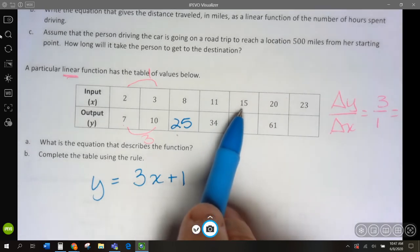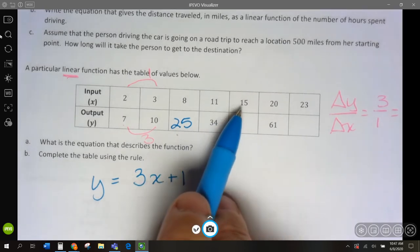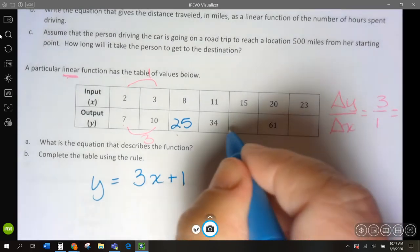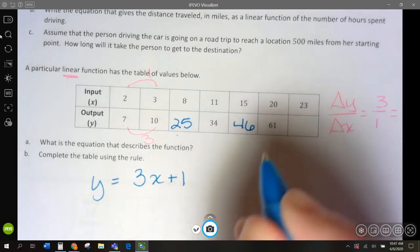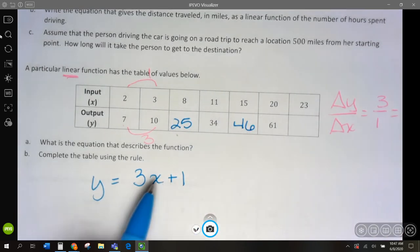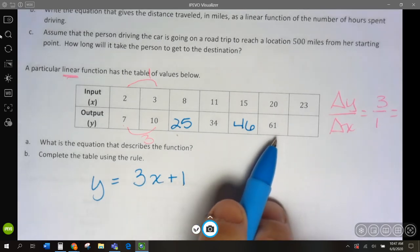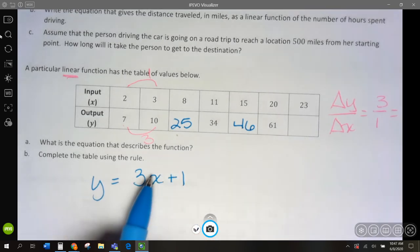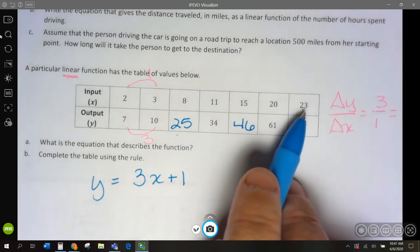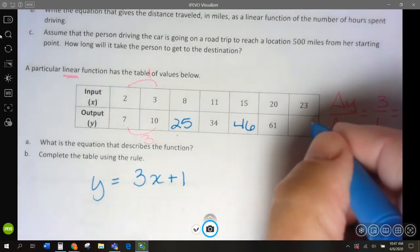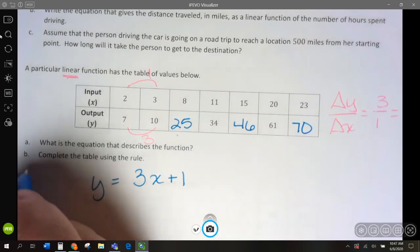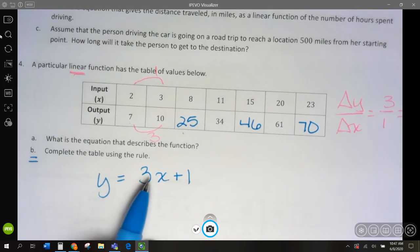If x is 15, 3 times 15 is 45, plus 1 is 46. If x is 20, 3 times 20 is 60, plus 1 is 61. If x is 23, 3 times 23 is 69, plus 1 would be 70. So, we just completed the rule for the rest of the graph for part B.